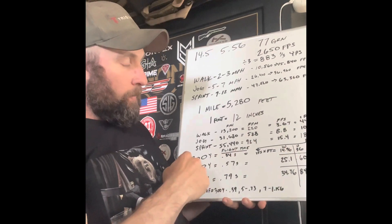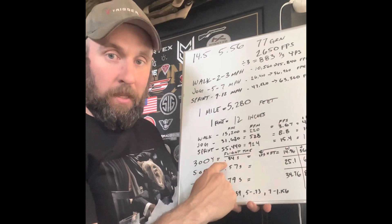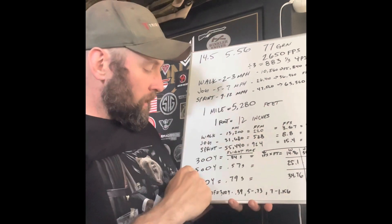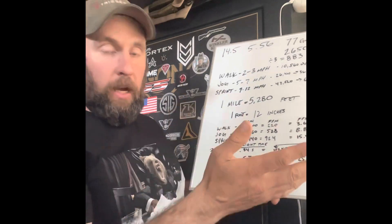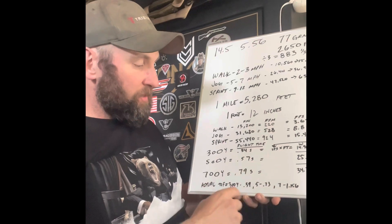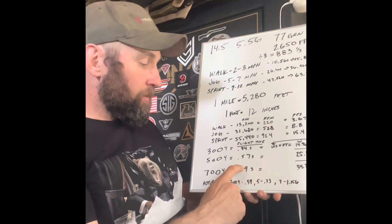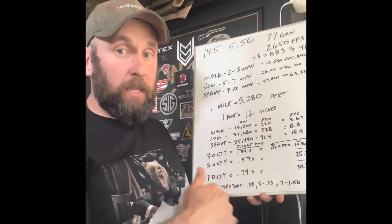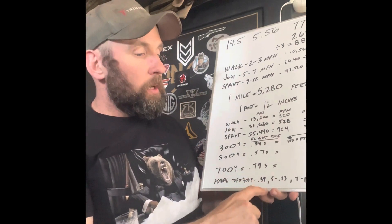At 300 yards, a walking target moves 14.96 inches during bullet flight time. At 500 yards it's 25.1 inches, and at 700 yards it's 34.76 inches. I did the same for jogging and running. Now, the actual time of flight based on decreased velocity is different: instead of 0.34 it's 0.39, instead of 0.57 it's 0.73, and instead of 0.79 it's actually 1.15 — pulled from Applied Ballistics using 2650 fps and 77 grain. You end up with drastically different flight times once you factor in velocity loss over distance.